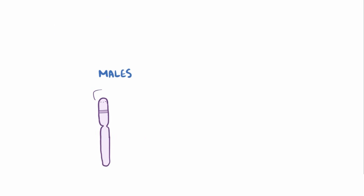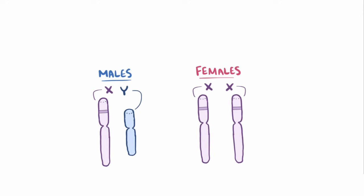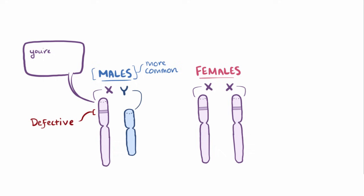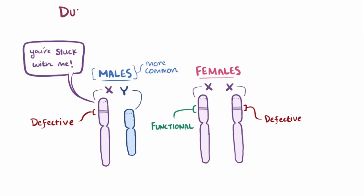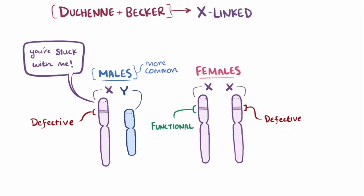Males have one X and one Y chromosome, and females have two X chromosomes. This means that muscular dystrophy is way more common in boys, because they only have one copy of the dystrophin gene, and if that copy is defective, it's the only one available to muscle cells, whereas girls with a defective dystrophin gene might have another functional one. Since this is linked to the X chromosome, both Duchenne and Becker muscular dystrophy are called X-linked recessive.